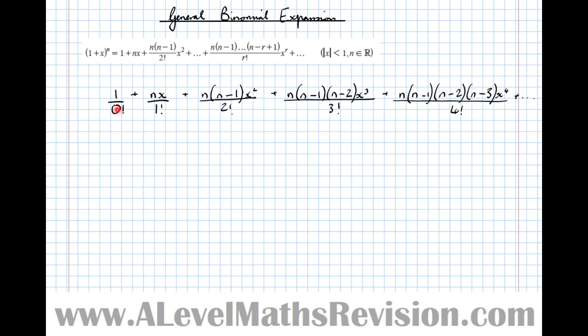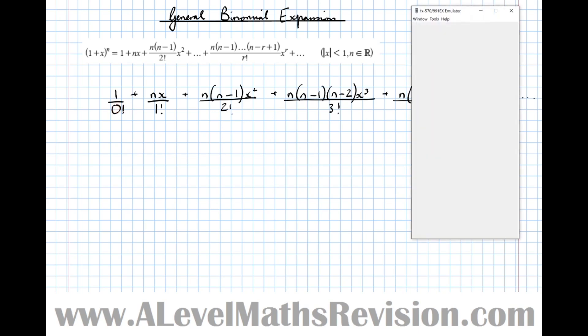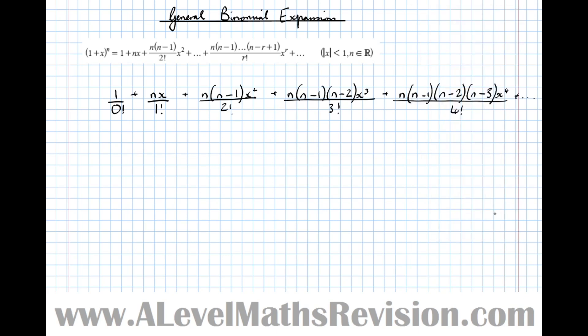You might think to yourself, well that's a divide by 0 error. Well, 0 factorial is defined to be 1. Let's just show in the calculator: 0 factorial equals 1. So that's the formula written out in full.